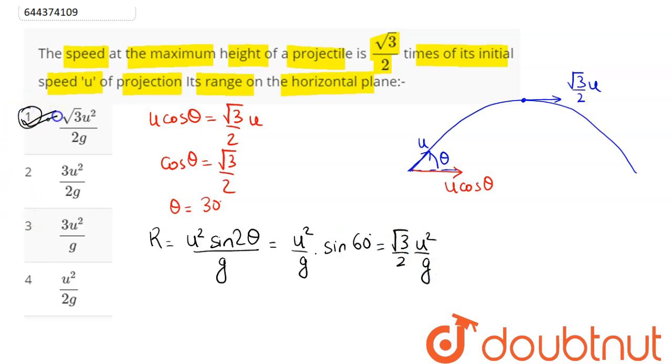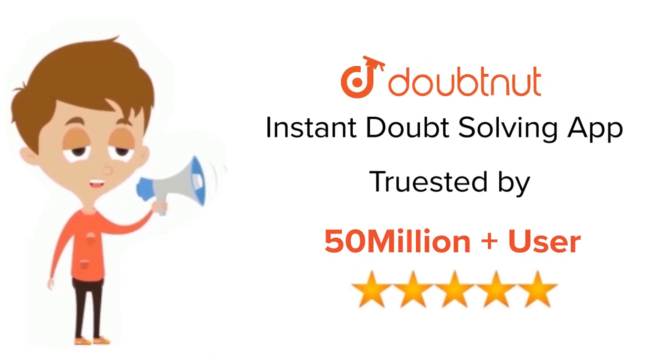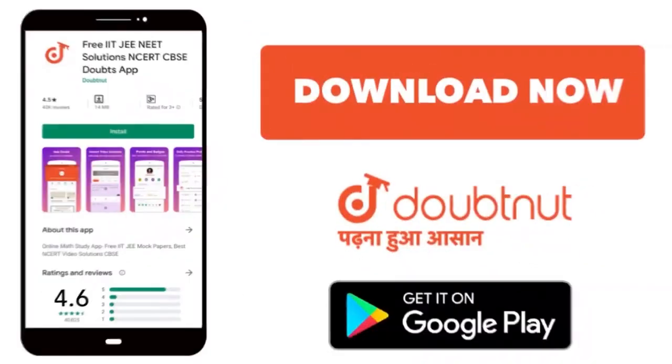is option number one. Hence we can say one is the correct answer. For class 6th to 12th, IIT-JEE and NEET level, trusted by more than 5 crore students, download Doubtnet app today.